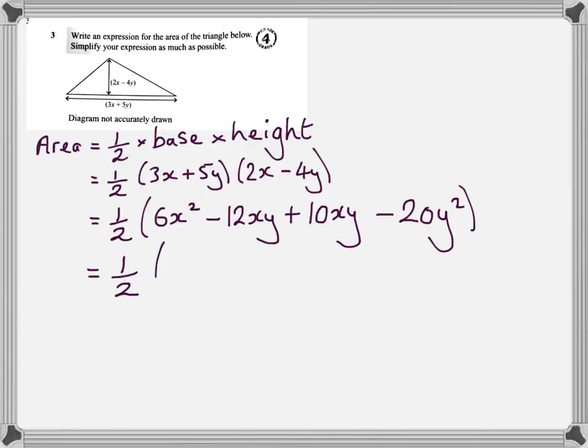Okay, we can tidy up a little bit inside the brackets by bringing together the minus 12xy and adding 10xy onto it, which will give me minus 2xy, and so I can rewrite the expression as you can see here.